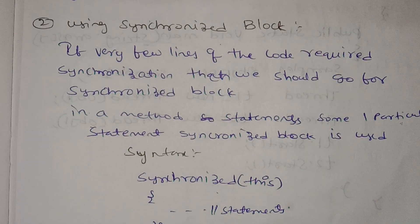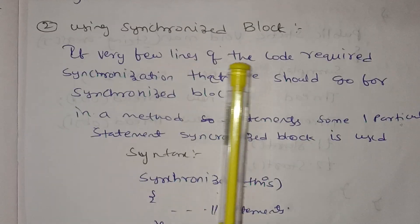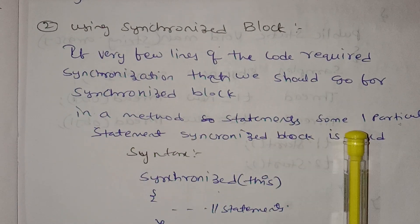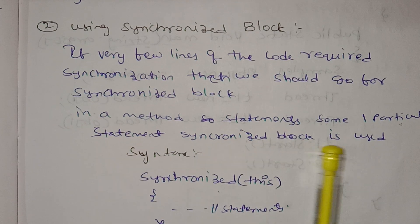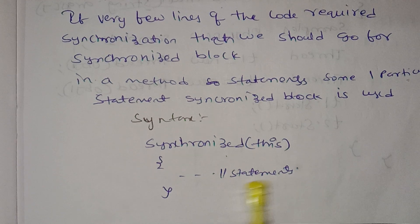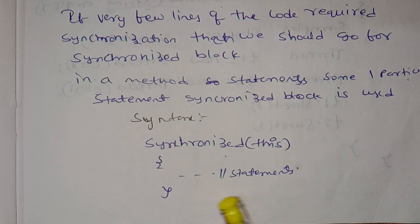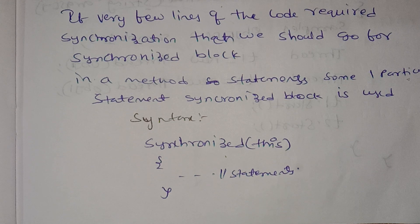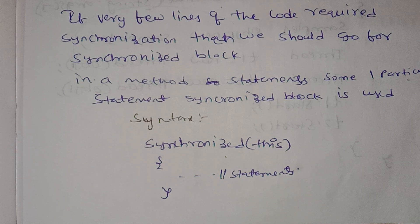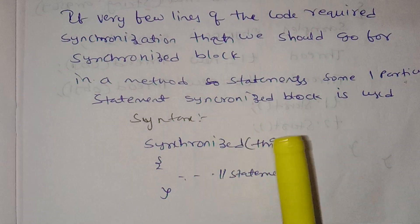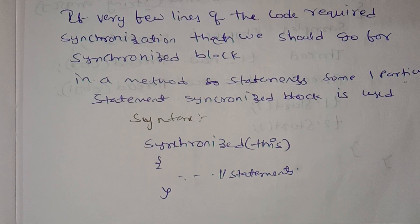The second method is using a synchronized block. If very few lines of code require synchronization, then we should go for the synchronized block. In a method with many statements, only one particular statement needs to be synchronized. We should use the synchronized block for that particular statement only.